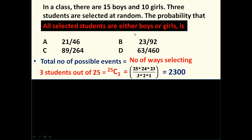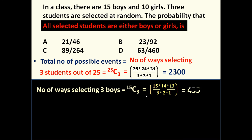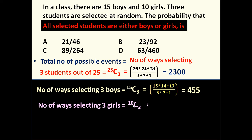These 3 students must be either all boys or all girls. The number of ways of selecting 3 boys out of 15 is 15C3, which equals 15 × 14 × 13 divided by 3 × 2 × 1, equal to 455. So 3 boys can be selected from 15 in 455 ways. The number of ways of selecting 3 girls out of 10 is 10C3, which equals 10 × 9 × 8 divided by 3 × 2 × 1, equal to 120.